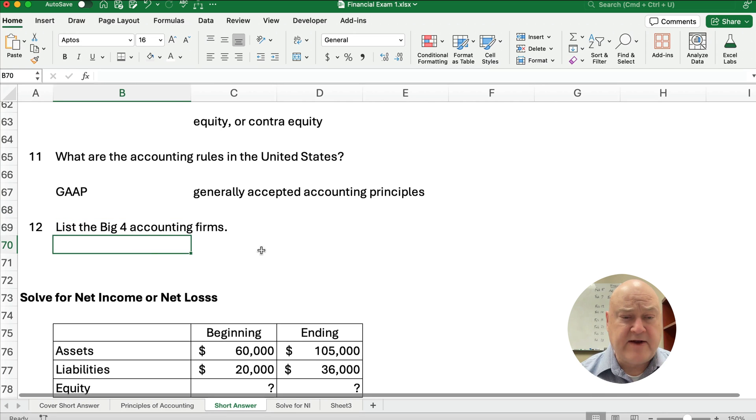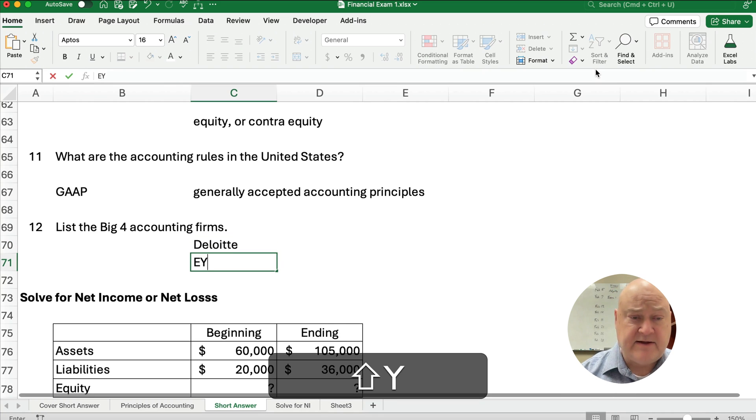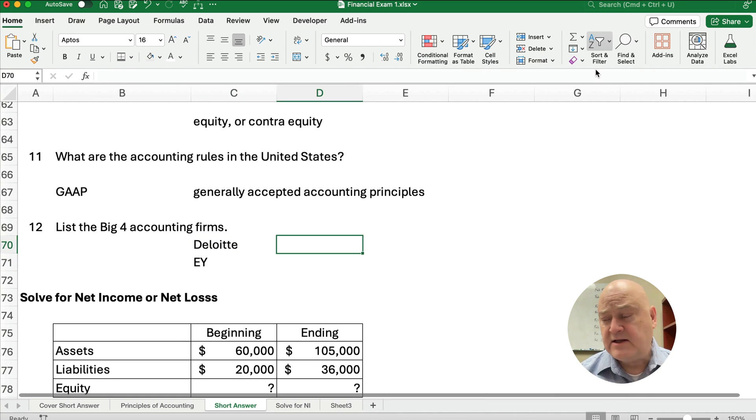We're going to list the big four accounting firms. This is probably not in your textbook, but your professor might give you this, and you might be expected to know this. You also want to know this because these are firms that might come to your campus and recruit. If you're going to be an accounting major or business major, then you need to know some of the big employers. Whether you work there or not, you need to know these for sure. So here are the firms. Deloitte is one. EY is one.